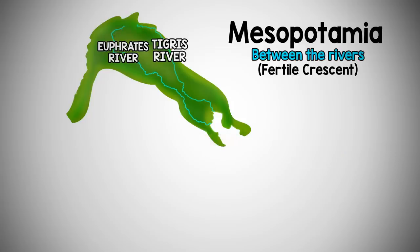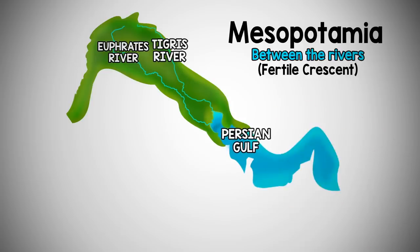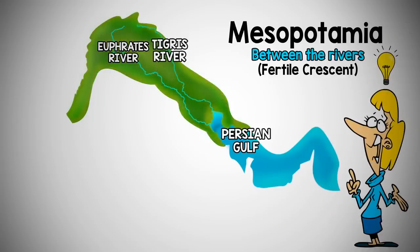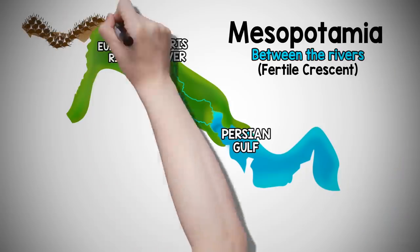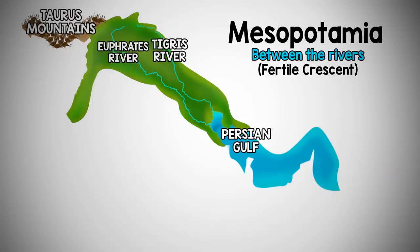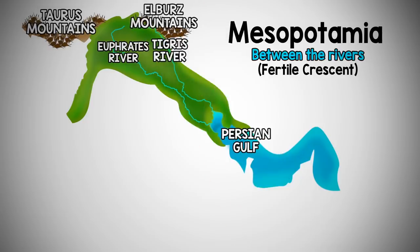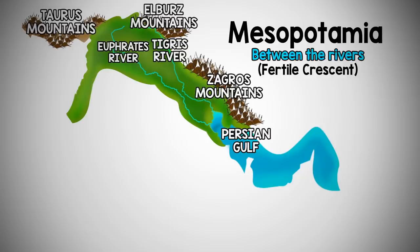Both rivers run southeast and empty into the Persian Gulf. In ancient times, Mesopotamia was controlled by many groups of people, so the size of the territory often changed. However, numerous natural borders give geographers an idea of its rough size. Both mountains and bodies of water bordered Mesopotamia. The Taurus Mountains to the northwest stood between Mesopotamia and Greece, and the Elborz Mountains lined Mesopotamia to the north.